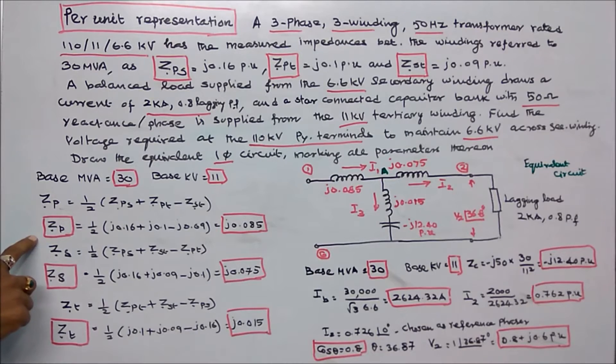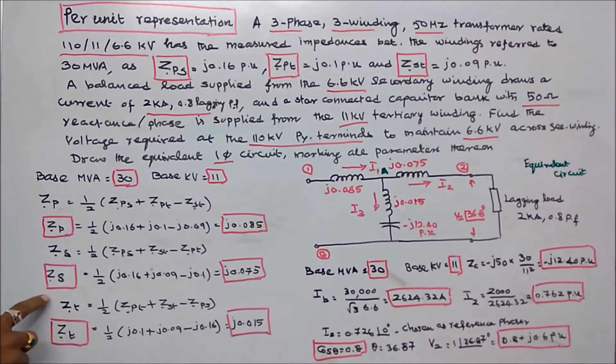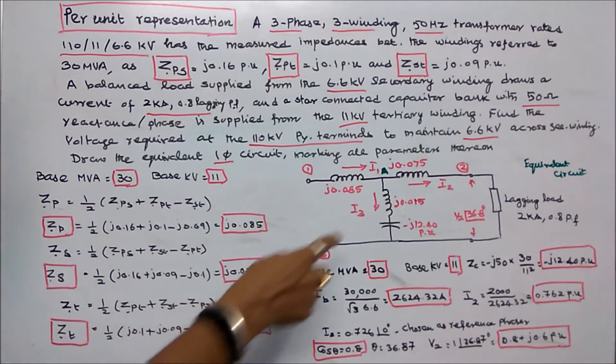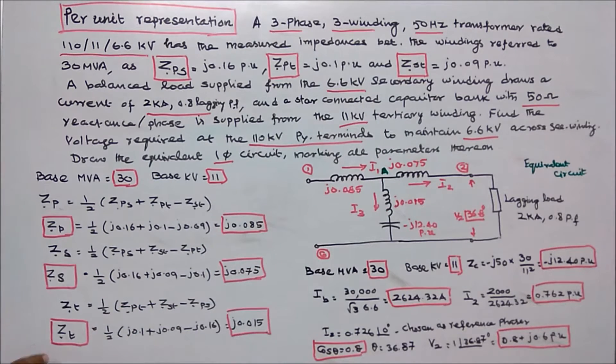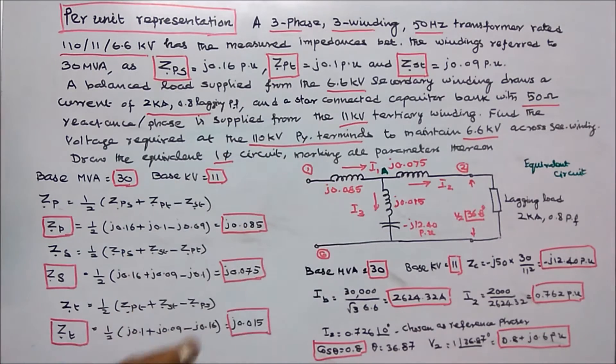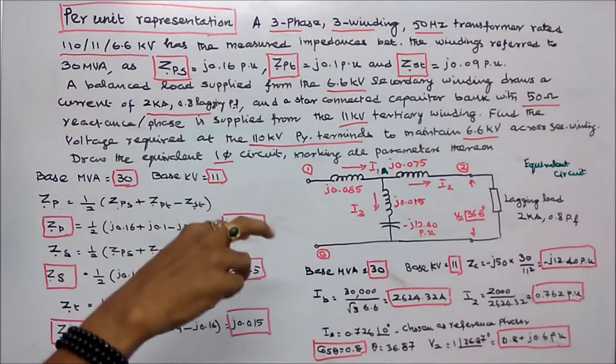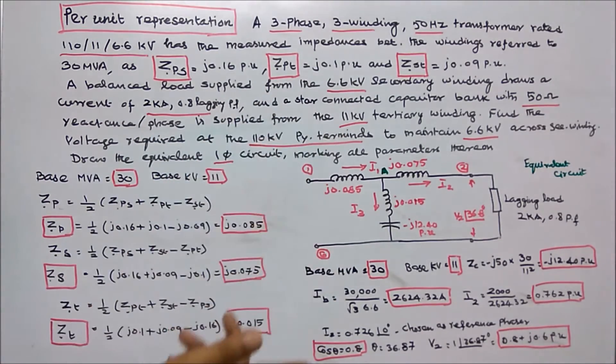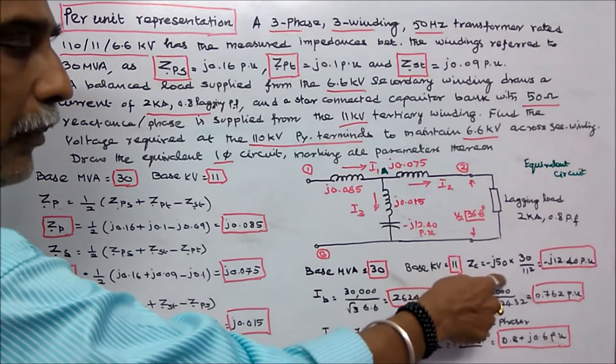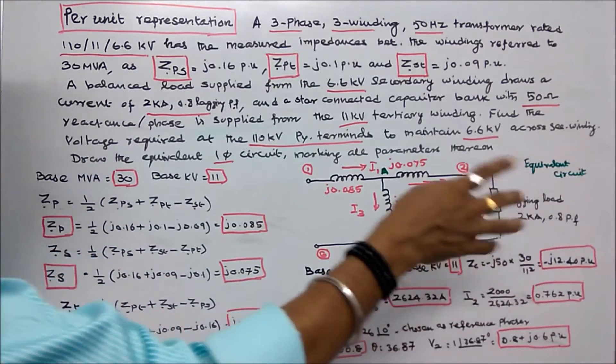Z per unit secondary is equal to J.075. Z per unit tertiary winding J.015. We can find the per unit reactance of the capacitor. Here the per unit reactance is given 50 Ohms. So actual Ohms into MVA by KV square, minus J 50 into 30 by 11 square that is equal to minus J 12.40 per unit.